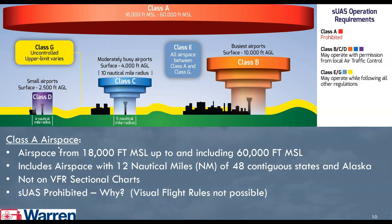So let's remember: Class A airspace goes from 18,000 feet MSL to 60,000 feet and includes airspace within 12 nautical miles of the 48 contiguous states. You will not see this on a sectional chart. UAS or small unmanned aircraft systems are prohibited there — you have to keep your drone within line of sight and below 400 feet, so there is no possible way to fly in Class A airspace.